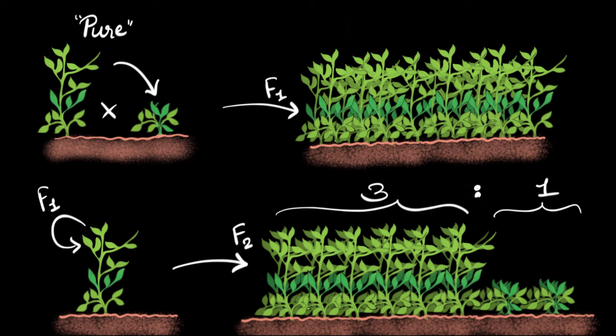To answer both these questions, Mendel comes up with two laws. The first one is called the law of dominance.